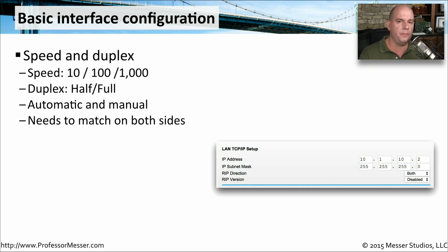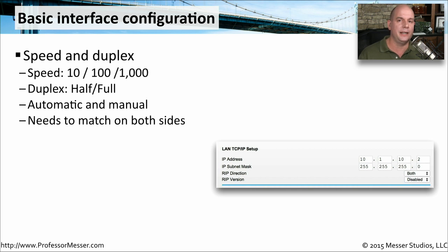This process can be configured manually for every single interface on the switch, or you can tell the switch to set the configuration automatically whenever a device connects to that interface. That way, you don't have to set up anything manually. This needs to match on both sides, though. The automated process generally works well, but occasionally there will be incompatibilities — you might have one side set to full duplex and the other set to half duplex, and performance will not be what it should be because of the mismatch in configurations.